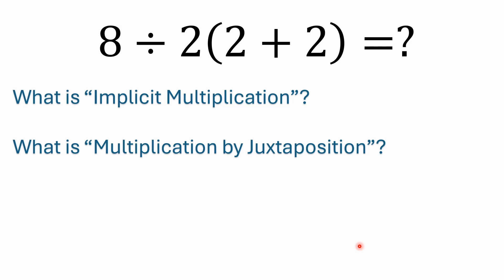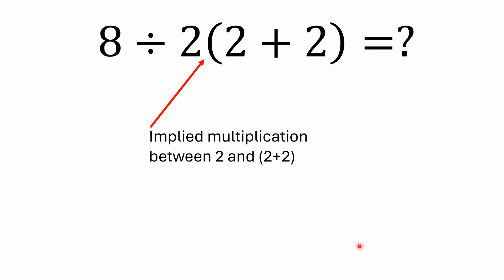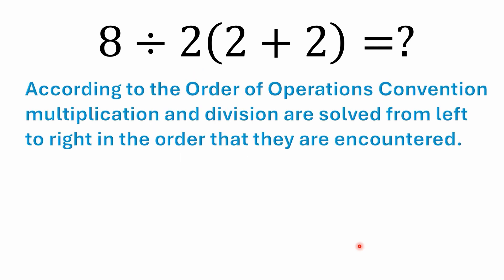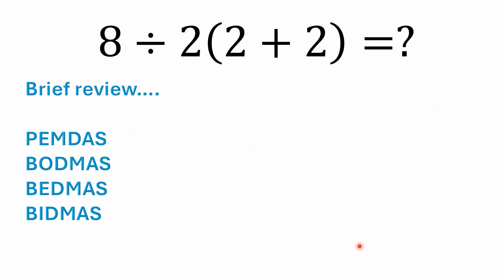When this topic comes up, what is implicit multiplication, what is multiplication by juxtaposition, well they're the same thing really. It means there's implied multiplication between the 2 and the 2 plus 2 that's in parentheses. According to the order of operations convention, multiplication and division are always solved from left to right in the order that they're encountered. You may have heard of acronyms like PEMDAS, BODMAS, BEDMAS, or BIDMAS if you live in an English-speaking country. These are all just different acronyms that all describe the same order of operations.